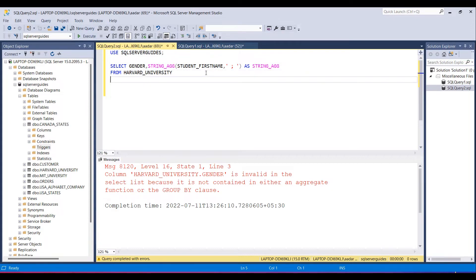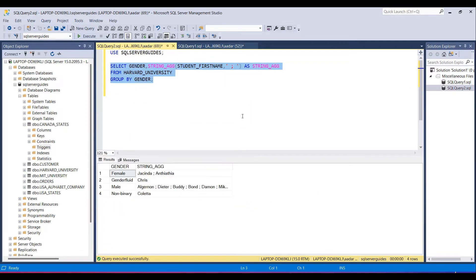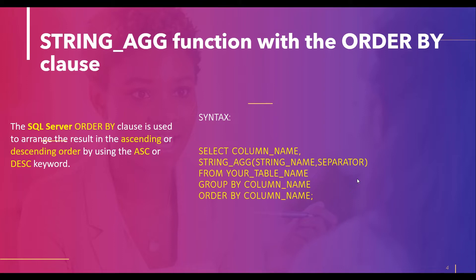So if I write the query again with the GROUP BY clause and the alias name and execute it — there we go. Now let me show you how to use STRING_AGG with the ORDER BY clause. The ORDER BY clause is normally used to arrange results in ascending or descending order using the ASC or DESC keyword. If you don't use either keyword, it will automatically arrange the result set in ascending order by default.